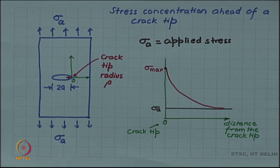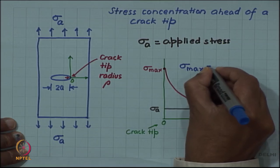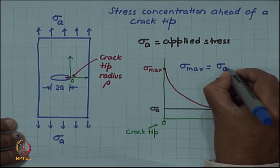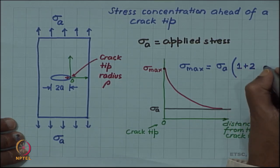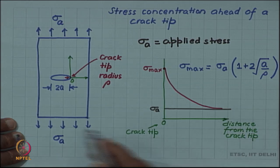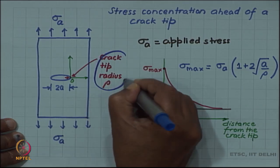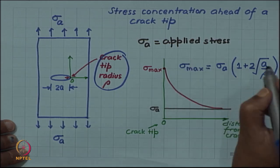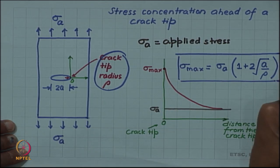The maximum stress is given by a simple formula. Sigma max is equal to sigma applied times a stress concentration factor which is 1 plus 2 times the square root of a divided by rho, where a is the half crack length and rho is the crack tip radius. This is the stress concentration formula which gives the maximum stress at the crack tip.